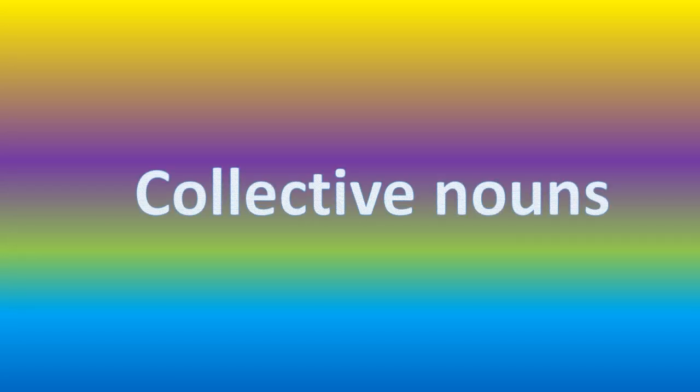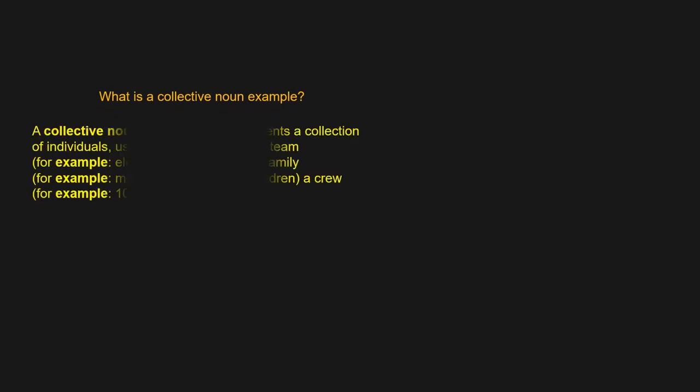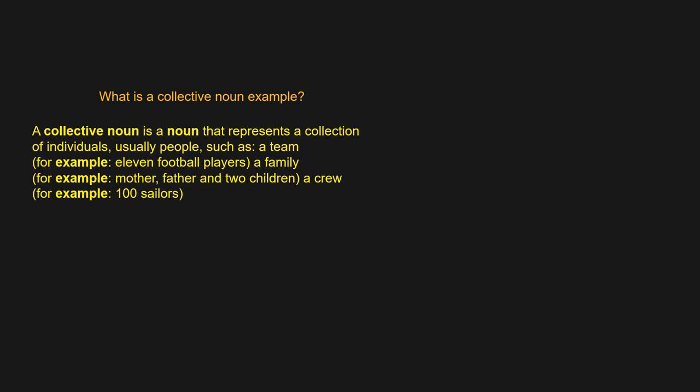Hi friends, let's learn about Collective Nouns. What is a Collective Noun? A Collective Noun is a noun that references a collection of individuals, usually people — such as a team. For example, 11 football players.